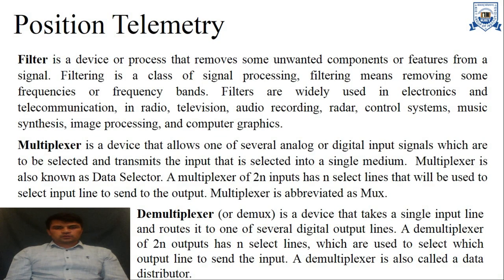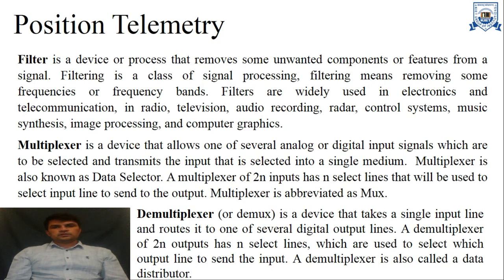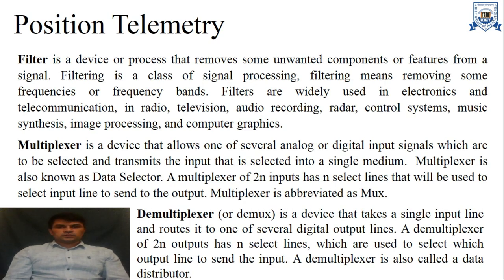Another component is the demultiplexer, used at the receiving end. Abbreviated as DEMUX, it is a device that takes a single input line and routes it to one of several digital output lines. A demultiplexer of 2-to-n outputs has n select lines used to select which output line to send the data to. A demultiplexer is also called a data distributor. For example, if we have four data types — pressure, flow, temperature, and current — and want only the current line, we select the appropriate select line and get the output of only that line.